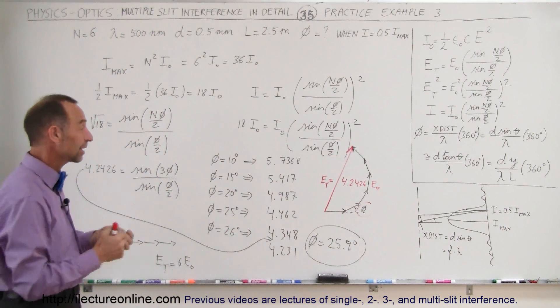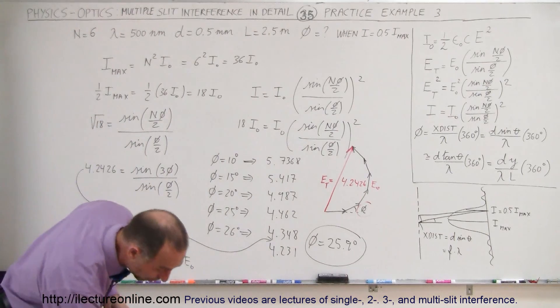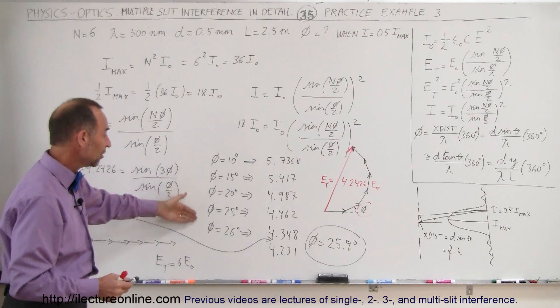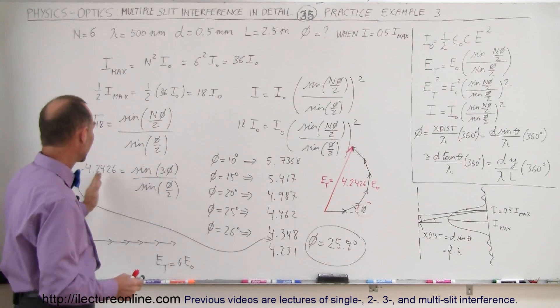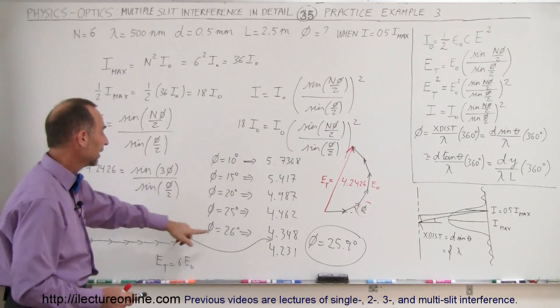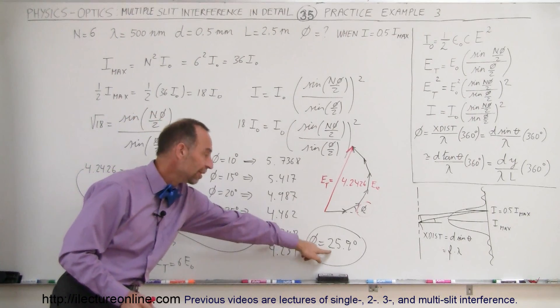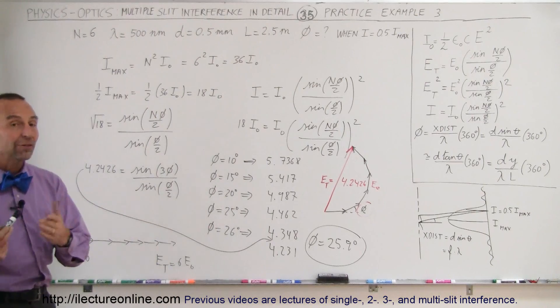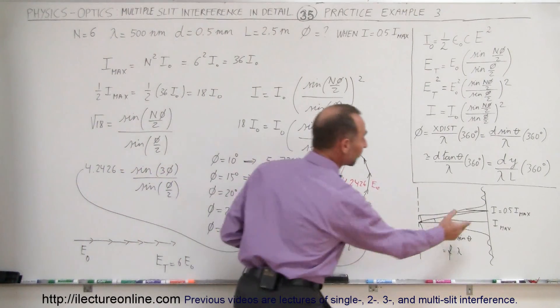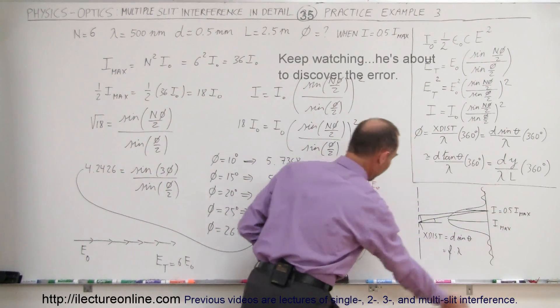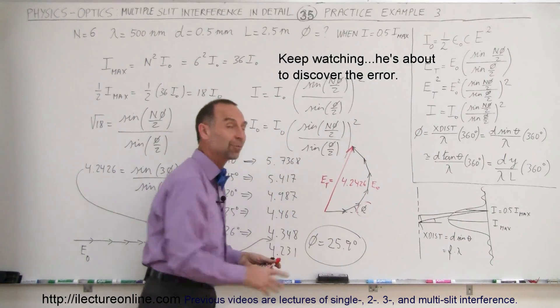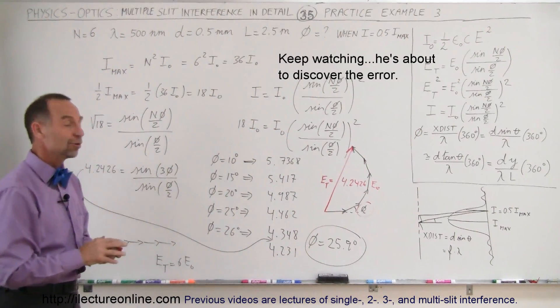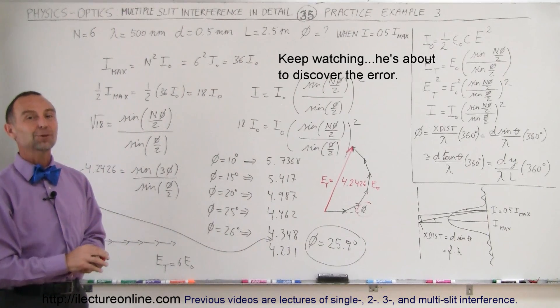Very difficult to do without calculators or computers. But if we're smart about it and we just kind of plug in test values, eventually we'll zoom in to the value where the left side equals the right side, and that happens to be pretty well where the phase angle is 25.9 degrees, which is therefore the answer to our question. At what phase angle do we have an intensity that's half the maximum intensity when we have 6 slits in this geometric situation.